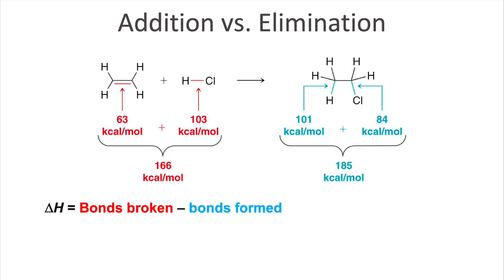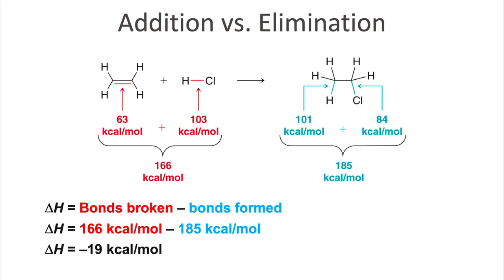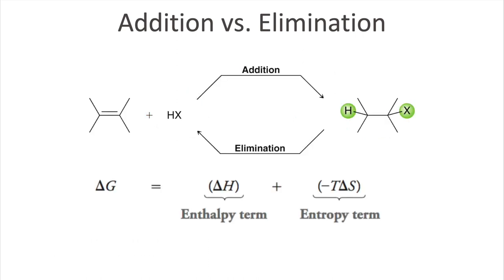Enthalpy is calculated from bonds broken minus bonds formed. Putting those numbers together, the enthalpy term is −19 kcal/mol. The key factor is that it is negative. Going back to the equation, if the ΔH term is negative and we want ΔG to be negative for a spontaneous forward reaction — the addition reaction — we have already calculated that in general, ΔH will be a negative term, which already favors ΔG being negative.